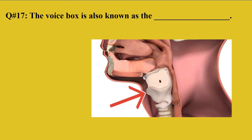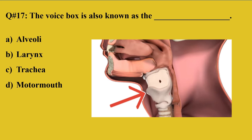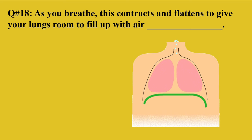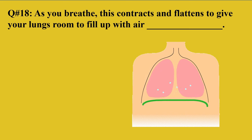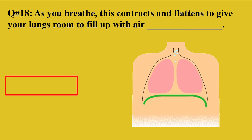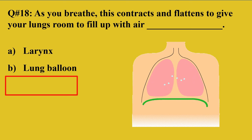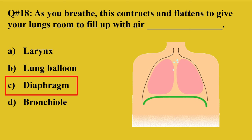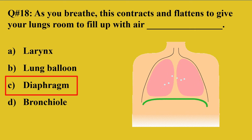Question 17: The voice box is also known as A: Alveoli, B: Larynx, C: Trachea, D: Motor mouth. The right option is B, larynx. The larynx is also known as the voice box, made up of C-shaped cartilaginous rings, present below the pharynx and just above the trachea. Question 18: As you breathe, this contracts and flattens to give your lungs room to fill with air. Options: A: Larynx, B: Lung balloon, C: Diaphragm, D: Bronchio. The right option is C, diaphragm — it contracts moving downward when you inhale, and relaxes moving upward when you exhale.